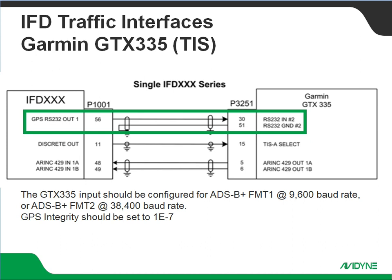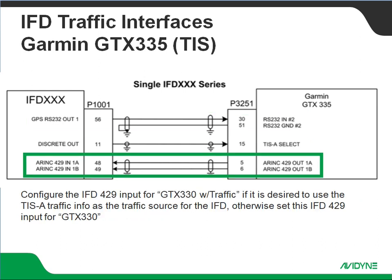GPS integrity needs to be set to 1E7 on the GTX 335. Then we've got an ARINC 429 coming back into the IFD. We're going to set that for GTX 330 with traffic if it is desired to use the TIS traffic from the GTX 335 as the traffic source for the IFD.